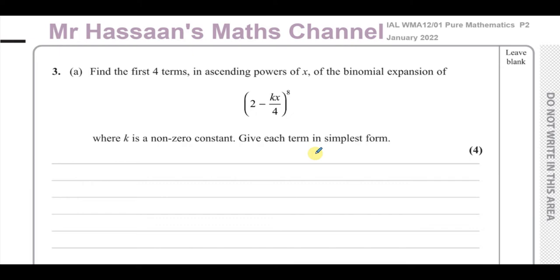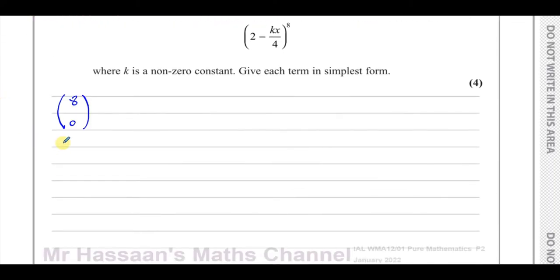The terms are going to be in terms of x. When we do binomial expansion, we're going to use the nCr method, which is basically the calculator way of using Pascal's triangle to find coefficients. We start off by writing out the nCr part: 8C0, and since we want the first four terms, we'll have 8C0, 8C1, 8C2, and 8C3.